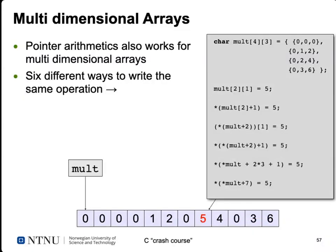Pointer arithmetic also works with multidimensional arrays. There are six different ways to write the same operation — setting an element to 5. This can be very confusing, especially when pointers to pointers are involved. If you're new to C, avoid using pointers wherever possible, but since they're unavoidable in library functions and operating system code, you need to understand how to operate on them.